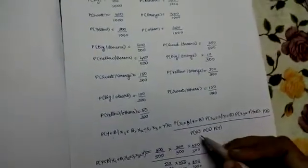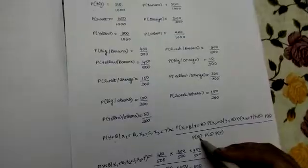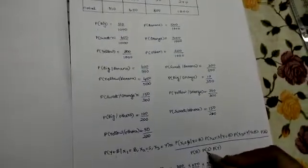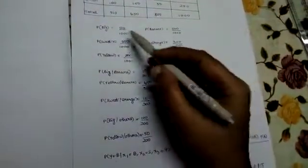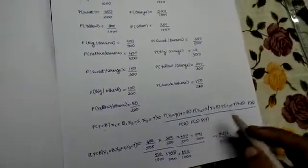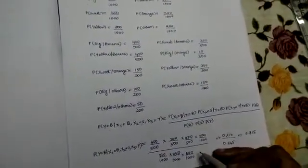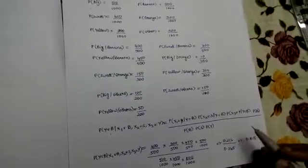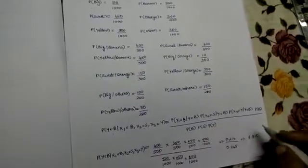Divided by probability of big, probability of sweet, and probability of yellow, which we found in the first. By substituting all these terms in this, we will be getting the probability of the required one. The probability of the required one is 0.815.